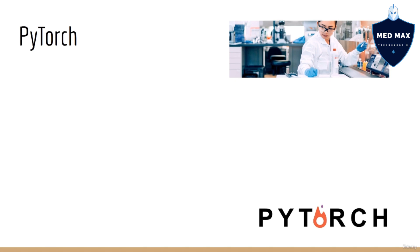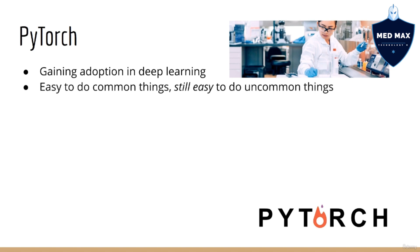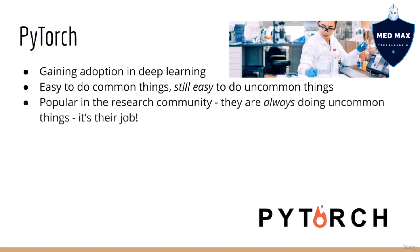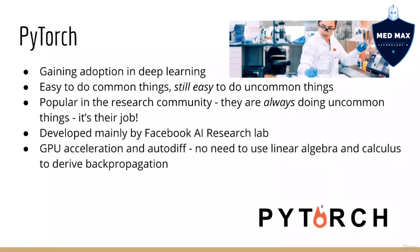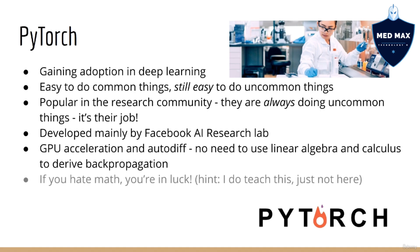PyTorch, on the other hand, has been slowly gaining adoption in the field of deep learning, thanks to the fact that it's relatively easy to do common things and still easy to do uncommon things. For this reason it's been extremely popular in the research community, who by definition do lots of uncommon things. PyTorch is developed mainly by Facebook — specifically the Facebook AI Research lab. As with all deep learning libraries, PyTorch is supported by GPU acceleration and automatic differentiation.